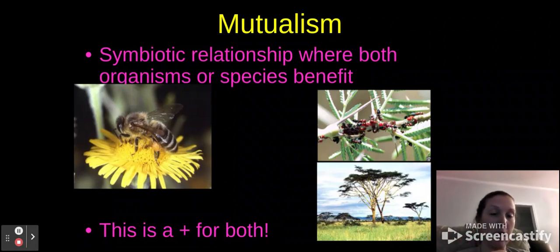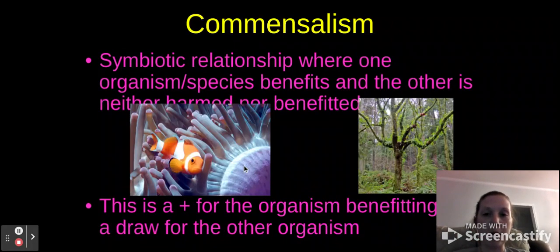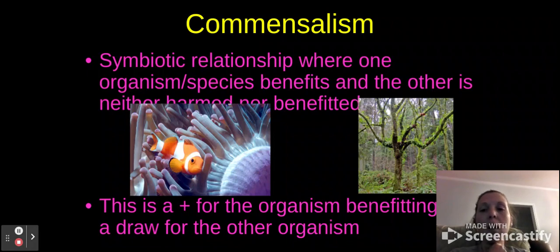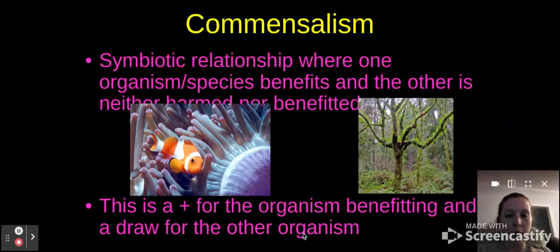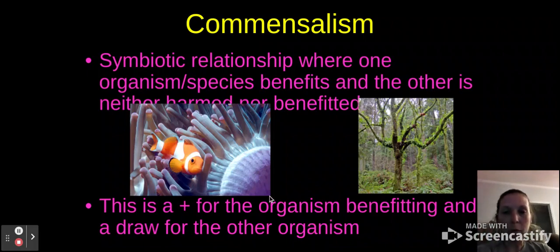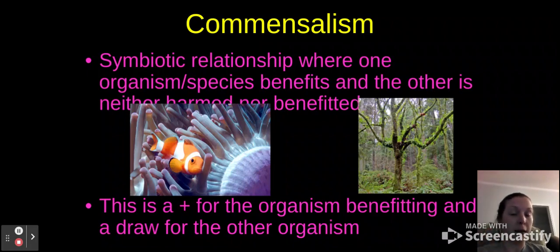If it's not beneficial to the other and actually negative for them, you give them a negative sign. Commensalism is a relationship where one organism or species benefits and the other is neither harmed nor benefited — so you'd draw a plus sign for the organism benefiting and leave it blank for the other. For example, a clownfish and a sea anemone — the clownfish can use the sea anemone as protection since it's not affected by its electric shock, but the sea anemone doesn't really get anything from it.